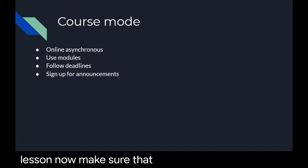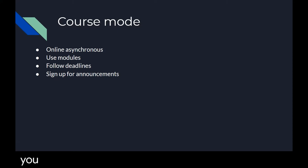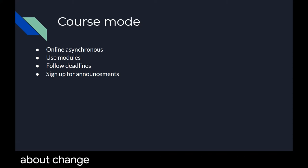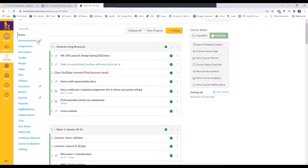Make sure that you sign up for announcements in Canvas. You want to make sure that you are getting any messages that I might send about changes to the course, updates on grades, and things like that. If you are in your Canvas course, you can do that right here. Make sure that you have this setting turned on.